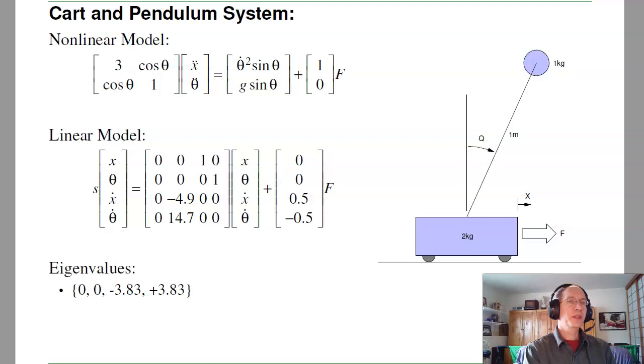Now for the cart pendulum system, this is a system we were not able to control using proportional derivative control. You can balance it. If you ever try to balance a stick on your hand, you know it can be done. But just using the two PD gains wasn't able to do it. Pole placement can do anything. Pole placement can place the poles anywhere you want. So if I feedback all four gains, or all four states - position, angle, velocity, angular velocity - I should be able to put the poles anywhere I want. So let's try it out.